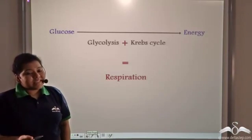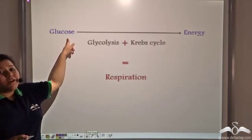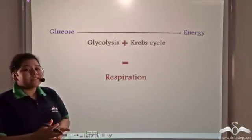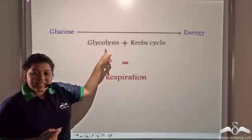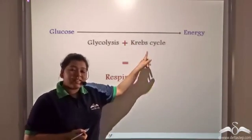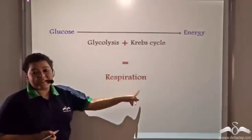So this process by which glucose forms a large amount of energy in a two-step process, first glycolysis in the cytoplasm and then Krebs cycle in the mitochondria, is known as respiration.